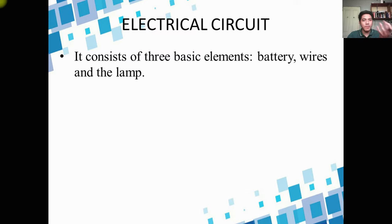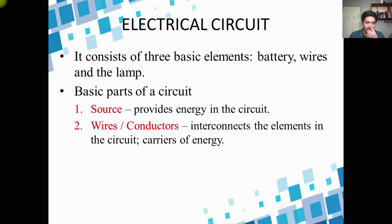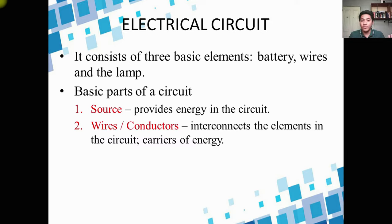An electric circuit consists of three basic elements: battery, wires, and lamps. The basic parts of a circuit are: number one, the source, which provides energy in the circuit — without the source there will be no current. Number two, wires and conductors, which interconnect the elements in the circuits and are also known as the carriers of the energy.